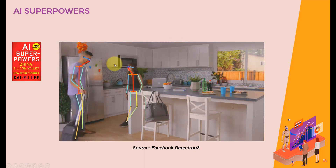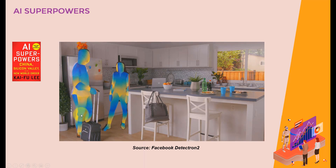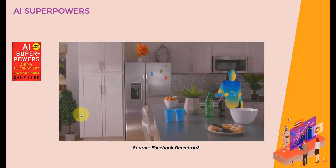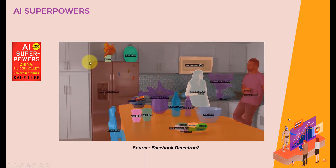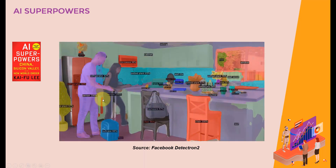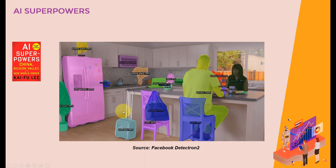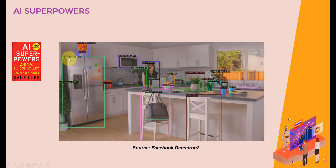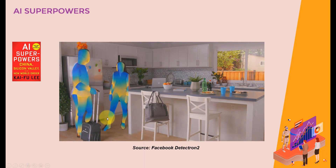AI can also perform what we call pose estimation — it can estimate the pose of humans, telling you where their hands and legs are. It's also doing pixel-level segmentation, segmenting the scene on a pixel level. And what you see here are bounding boxes around different objects: a backpack, a chair, a suitcase — and it's pretty accurate. So it can draw a bounding box around objects, perform pose estimation, and pixel-level semantic segmentation.